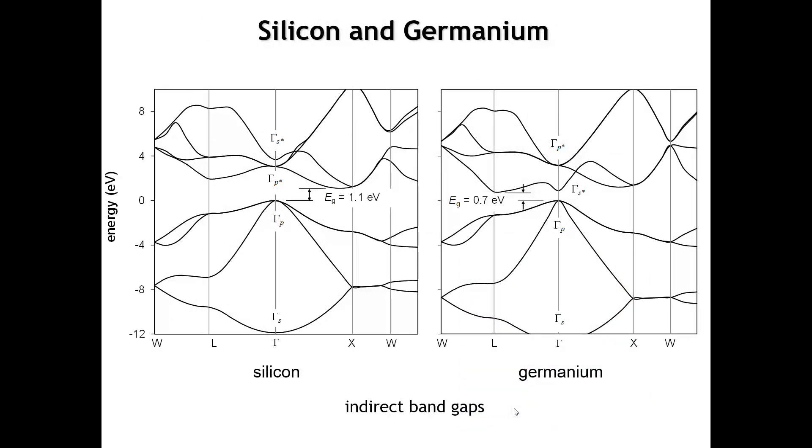Let's look at the band structures of silicon and germanium. Qualitatively, these band structures are very similar to that of diamond. In fact, they're both indirect band gap semiconductors with a valence band maximum at gamma and a conduction band minimum at another point in the Brillouin zone.